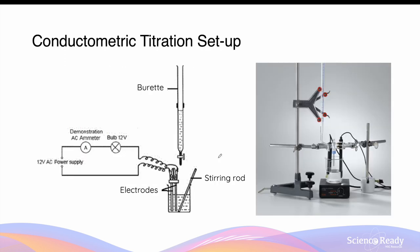The setup for conductometric titration is quite similar to that of normal titration using indicators. We again have two components: the burette, which contains the titrant — either the acid or base — and instead of a conical flask, we use a beaker, which contains either the unknown solution we are trying to analyze or the standard solution.